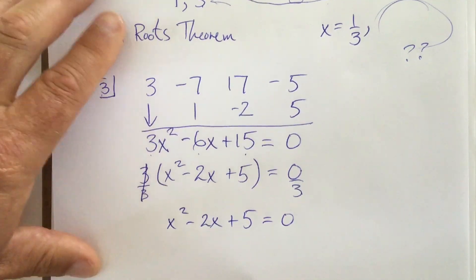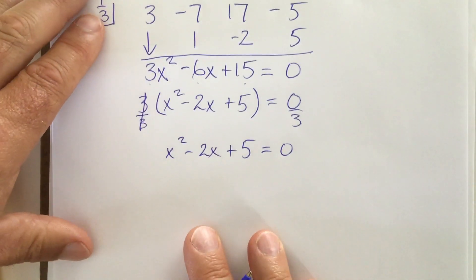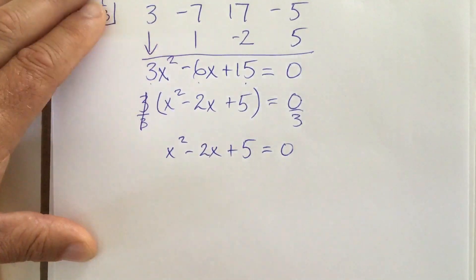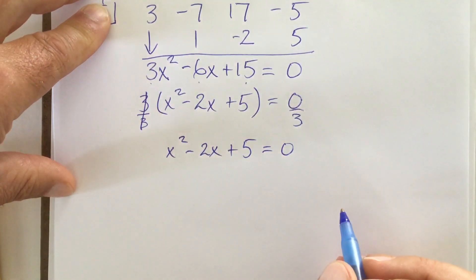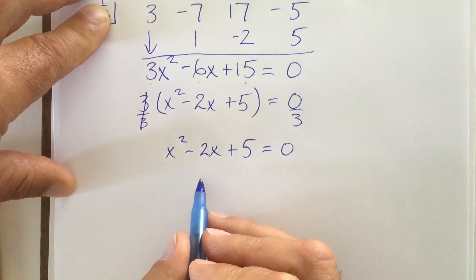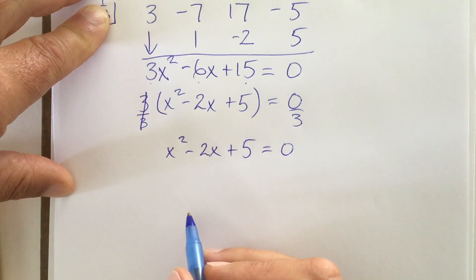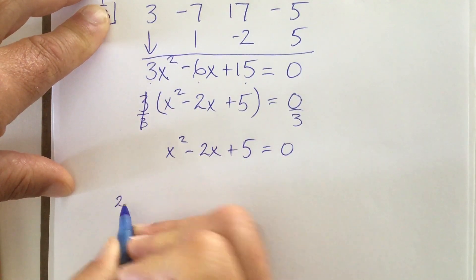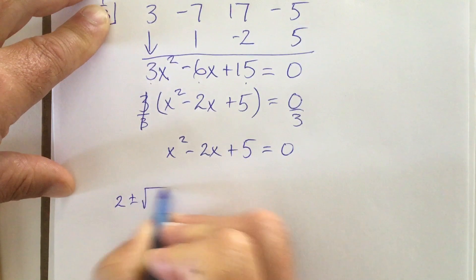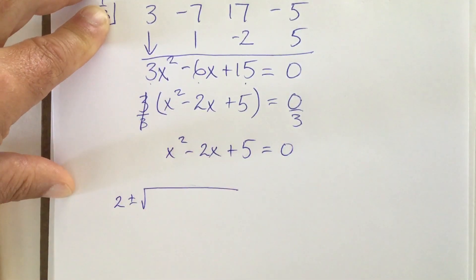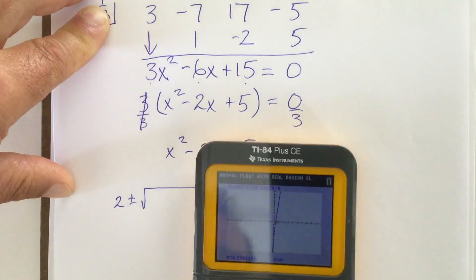So I end up with x squared minus 2x plus 5 equals zero. I can solve that using quadratic formula, and the numbers are tinier. Now, here's the thing, though. I wanted to show you this. When you use quadratic formula, negative b plus or minus square root of, be careful. b squared. Negative 2 squared means negative 2 times negative 2, which I know is 4. But be careful.